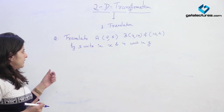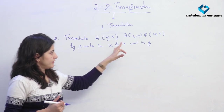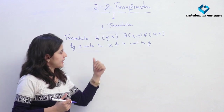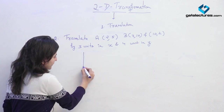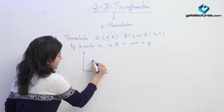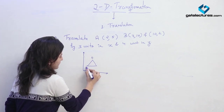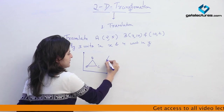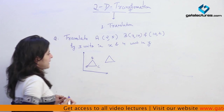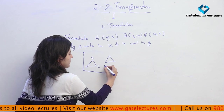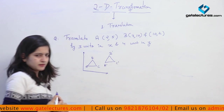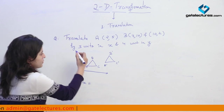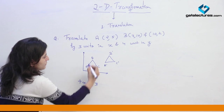This is a numerical example based on the translation operation. The question is: translate A(2,5), B(7,10) and C(10,2) — these are the coordinates of a triangle ABC — and we have to translate it by 3 units in the x direction and 4 units in the y direction. First we will do it by a figure. We are having a triangle ABC and we have to translate it, meaning we have to change the position of this triangle by 3 units in x direction and 4 units in y direction. So T x equals 3 units and T y equals 4 units.